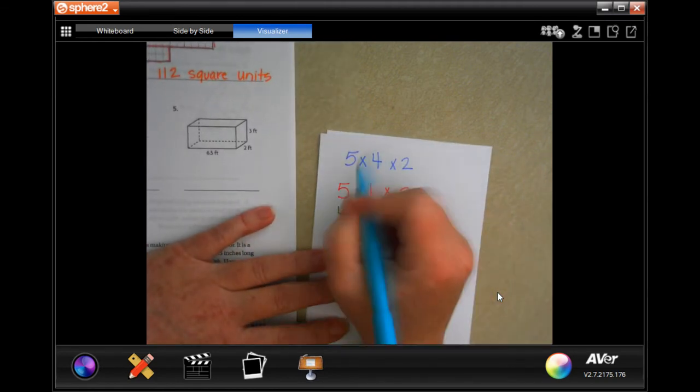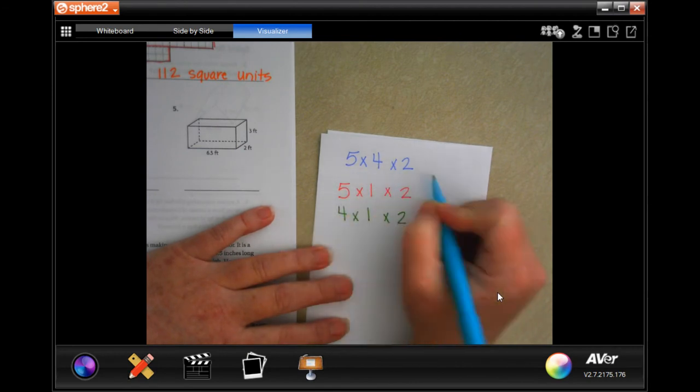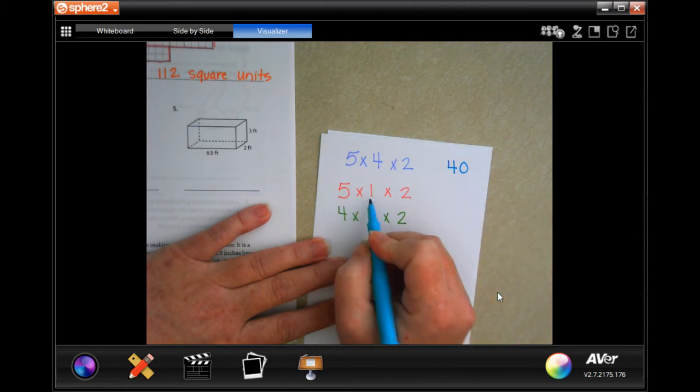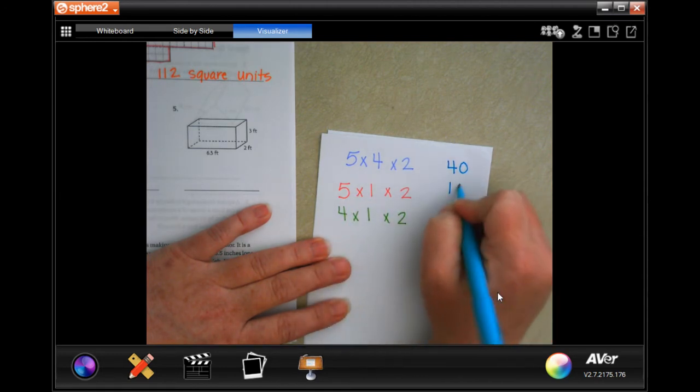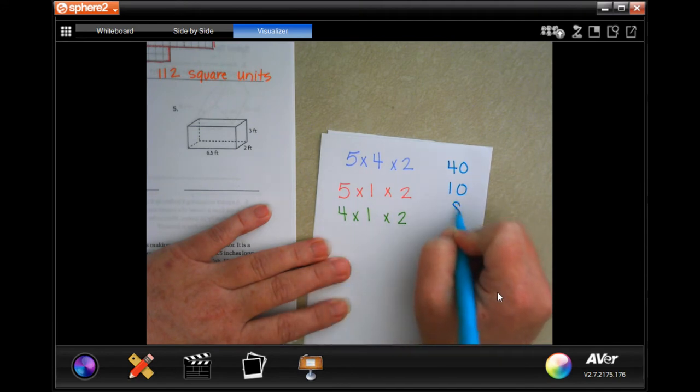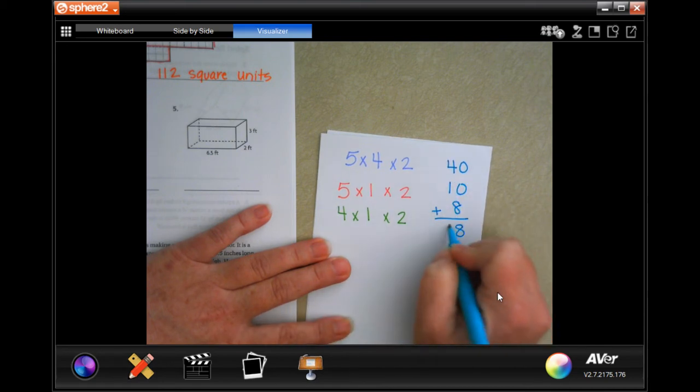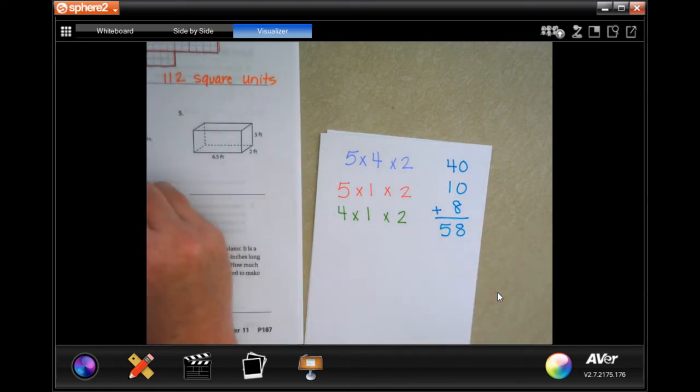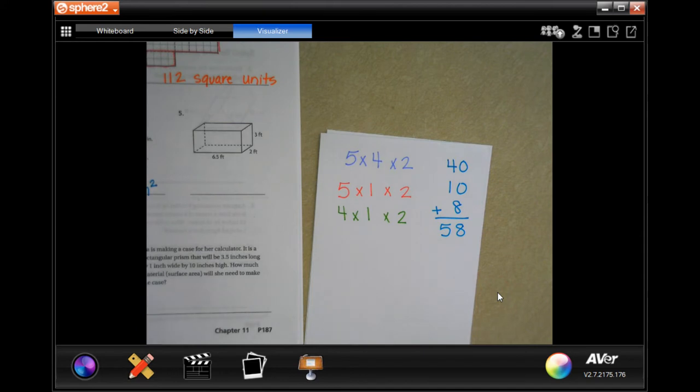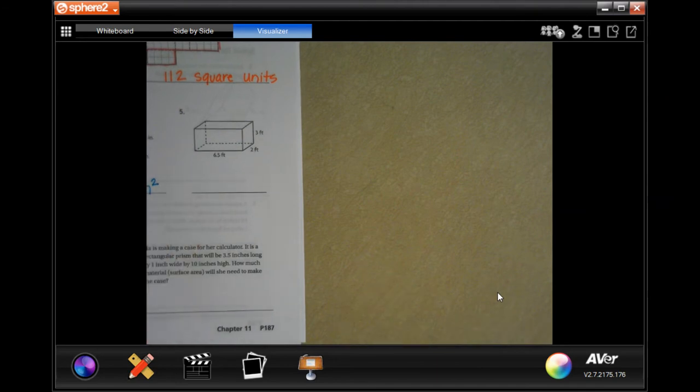So now, five times four is 20, times two is 40. Five times one is five, times two, 10. Four times one is four, times two is eight. Add those up. Eight, four plus one, five, 58 inches squared. Multiply inches by inches, it's got to be square inches. All right, I'm going to let you guys do number five.